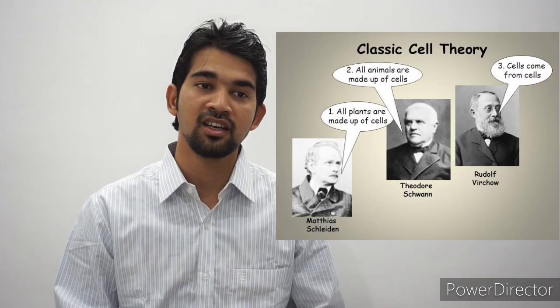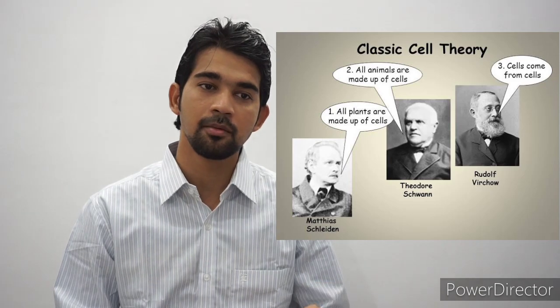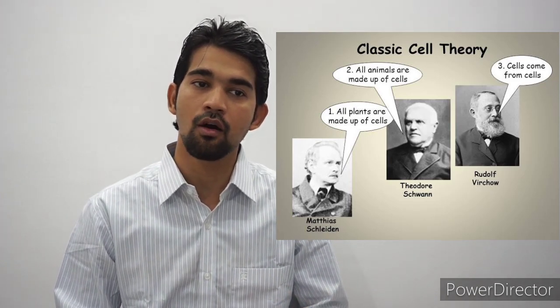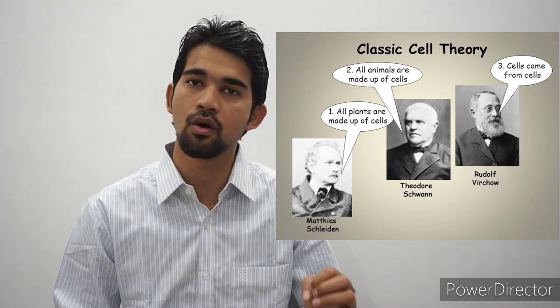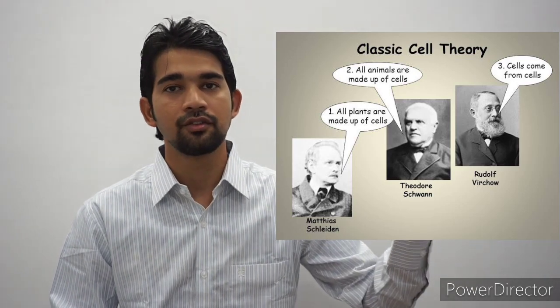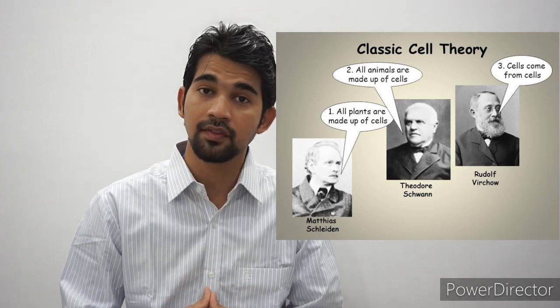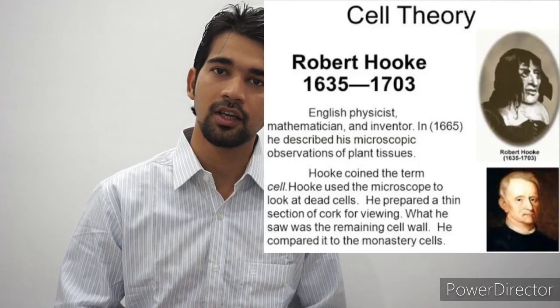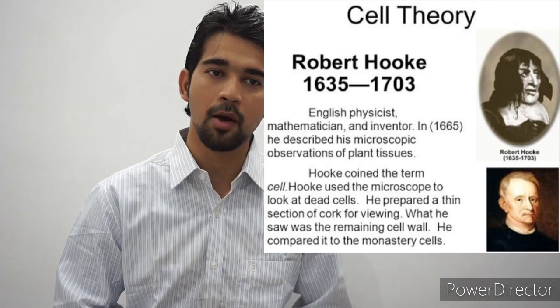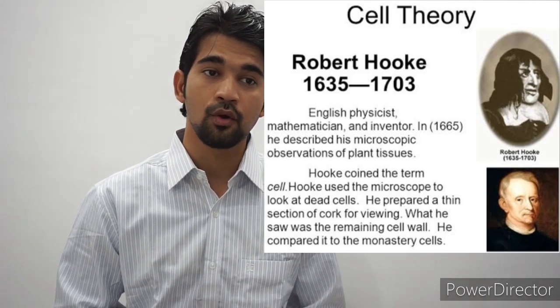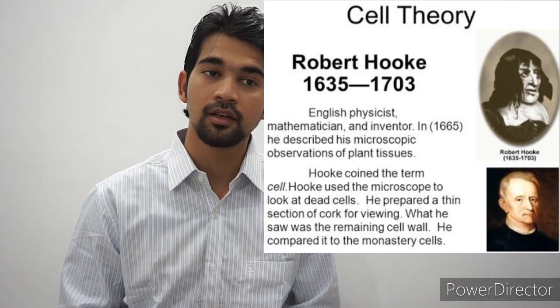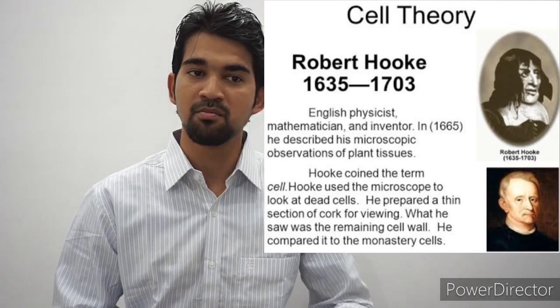The first key fact about cells is that in 1839, Matthias Jakob Schleiden and Theodor Schwann stated that all organisms are composed of one or more cells. And before that, cells were discovered by Robert Hooke in 1665, who named them for their resemblance to the small cells inhabited by Christian monks in a monastery.